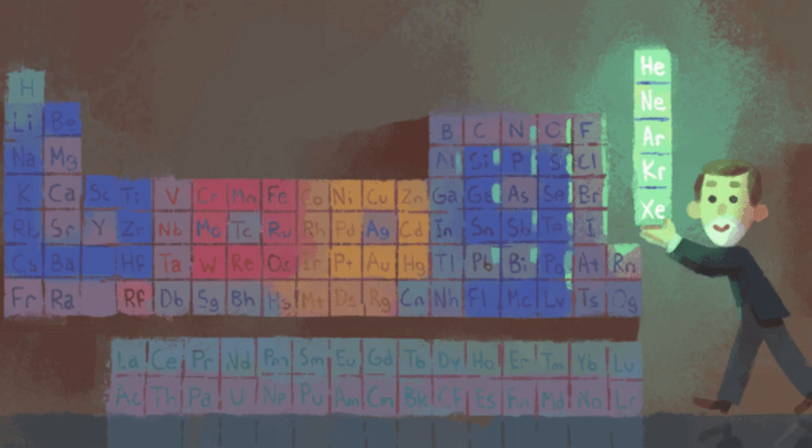Ramsay was intrigued when another British physicist, Lord Raleigh, observed that nitrogen in the Earth's atmosphere had a higher atomic weight than nitrogen in the laboratory. In 1894, he and Lord Raleigh announced the discovery of a chemically inert gas, which they named argon.